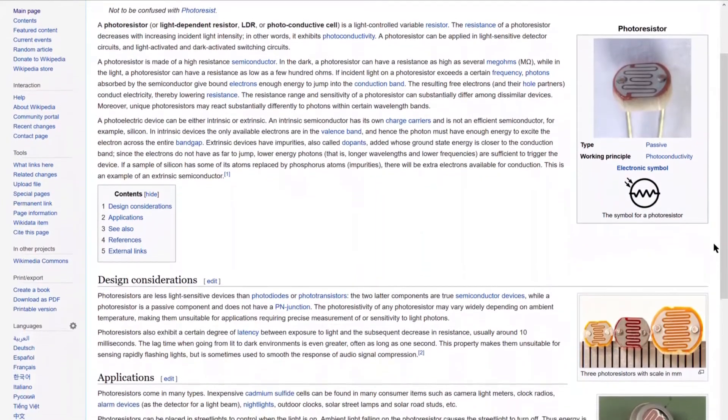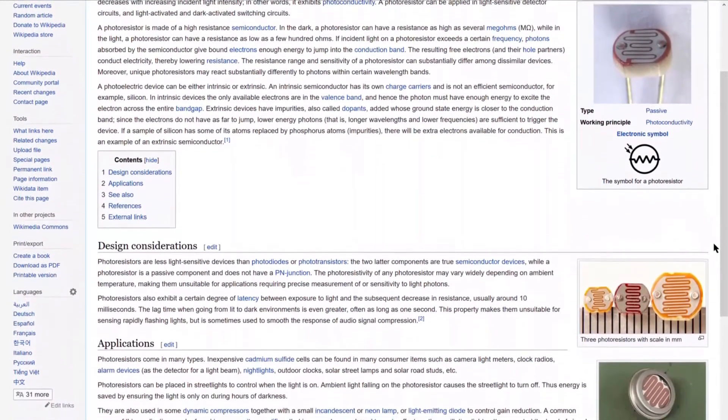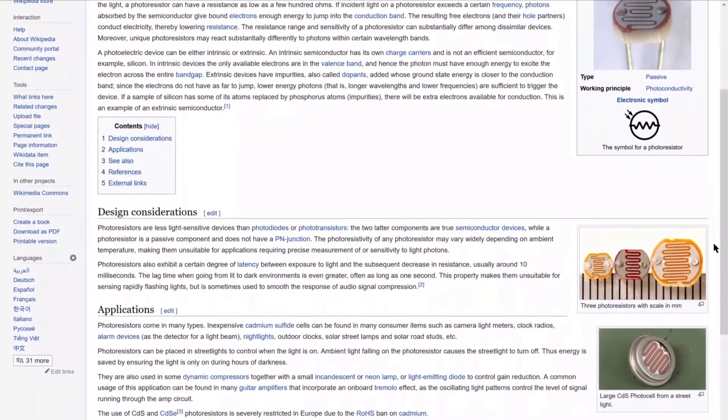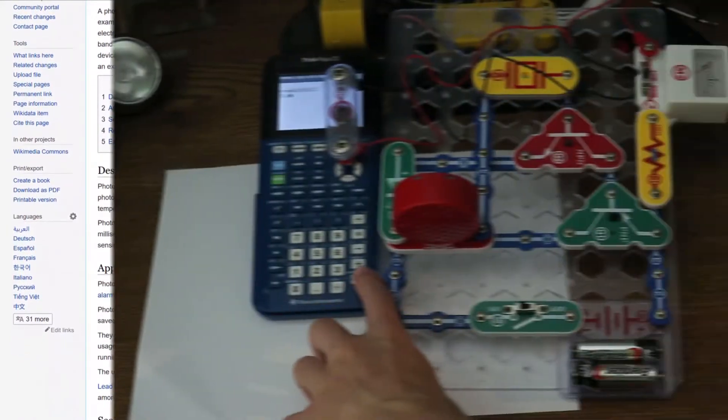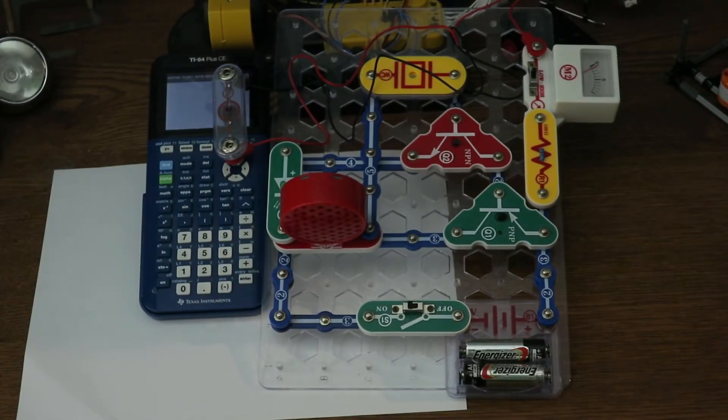Photoresistors are basically resistors that vary their resistance depending on how bright something is. Photoresistors are one of the ways you can create external hardware for the calculator, such as a speaker system for music, without needing to understand how the USB port works.